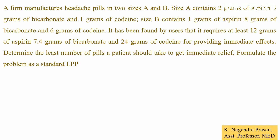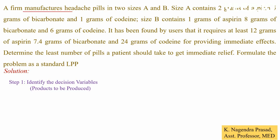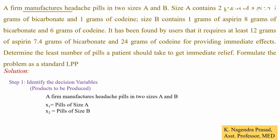Formulate the problem as a standard LP. So let us see the solution. The first step in the solution is to identify the decision variables. Study the data and observe what products are to be produced. In the problem, by observing the first sentence, it is noted that a firm manufactures headache pills in two sizes A and B. So decision variables are the two sizes of pills, that is size A and B. So x1 equals the pills of size A and x2 equals the pills of size B.